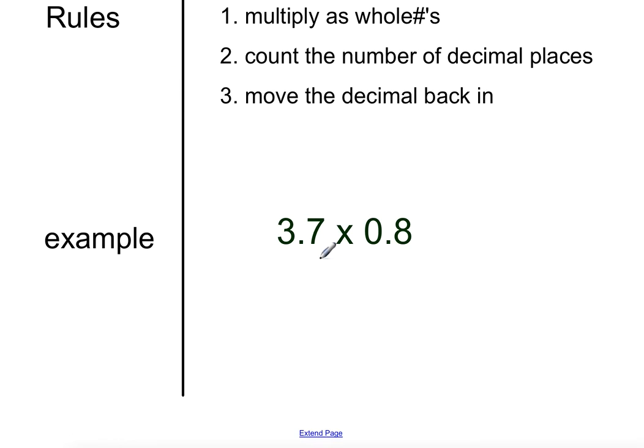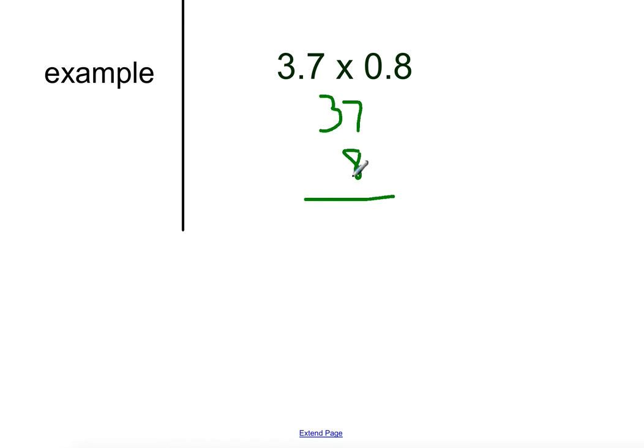So, if we did this one, we would have 37 times 8. I don't even need to write the 0. I'm not lining up decimal places. I'm just old-fashioned multiplying. 8 times 7 is 56, so I put down the 6. Carry the 5. 8 times 3 is 24, plus 5 is 29.